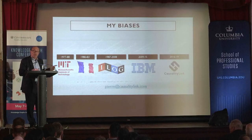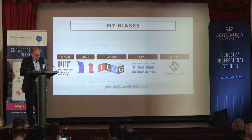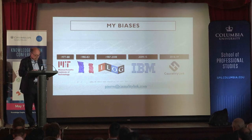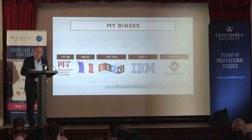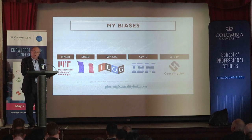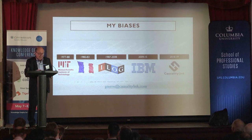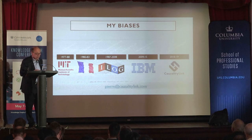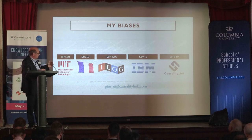At IBM, I was a VP in charge of the deployment of advanced analytics in Watson for a few years. Three years ago, I created Causality Link — building the next generation of decision support systems for the finance world using AI, collective intelligence, and causal graphs. My biases are very strong in favor of symbolic AI and therefore powerful and readable representations. I will now go quickly into the two ideas that support this historical perspective.